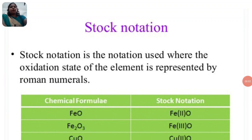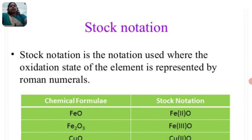Good morning, welcome to the TSN online classes. Today I am going to explain Class 11 Chemistry, Chapter 8: Redox. Today's topic is Stock Notation. Stock notation is the notation used where the oxidation state of the element is represented by Roman numerals.